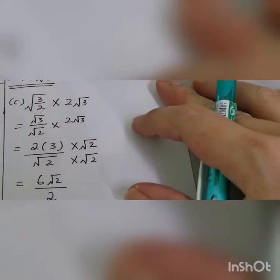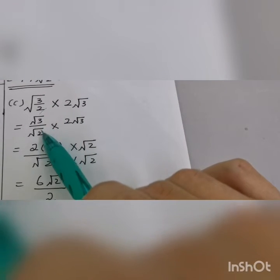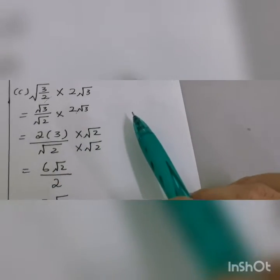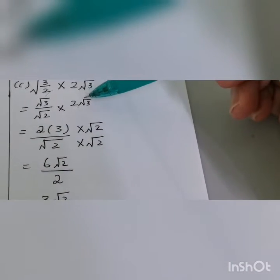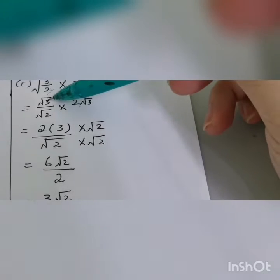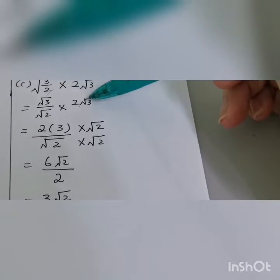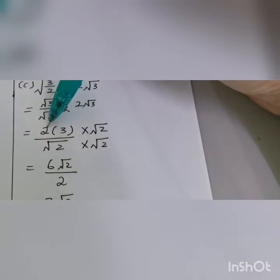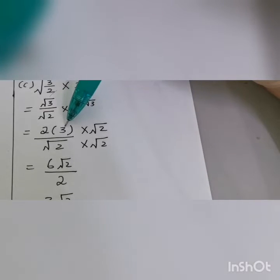For a fraction, you can separate it — for example, square root of 3 over square root of 2, times this one. Here we only multiply by square root of 3. So 2 times nothing stays 2, and square root of 3 times square root of 3 becomes 3 only.